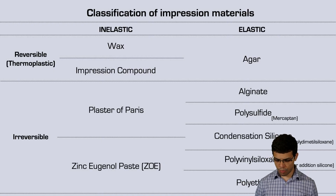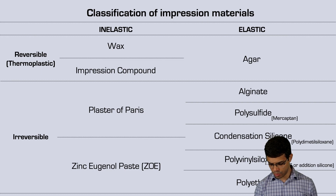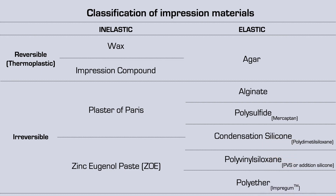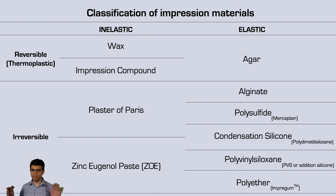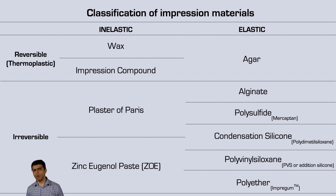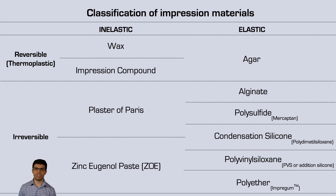Here is the classification of all impression materials. Materials can be considered reversible and irreversible, and also inelastic and elastic. These are the main properties. Within this classification you can see all the materials available. Most of those you're going to see are extinguished and we don't use anymore, but it's important to understand some of those.